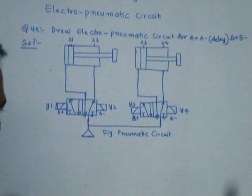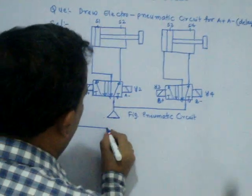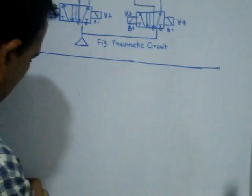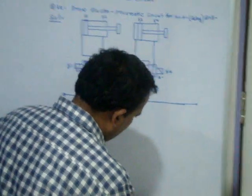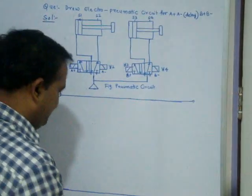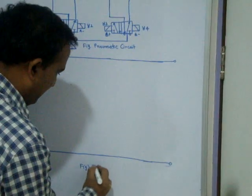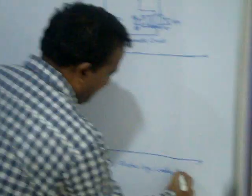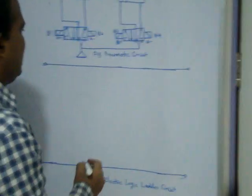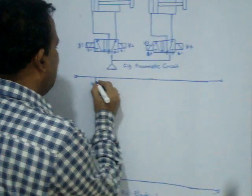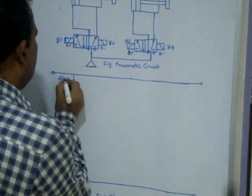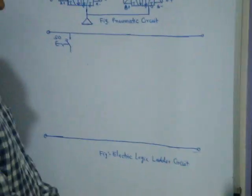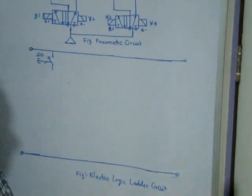I'll start with one master control button, which is an emergency control button. This is called an electric logic ladder — this structure is called a rung. I'll use one master control button that is a detent switch, called S naught. If I press S naught, then only the entire circuit starts. If I turn off S naught, then immediately the circuit stops. This is S naught — it is called the emergency control.